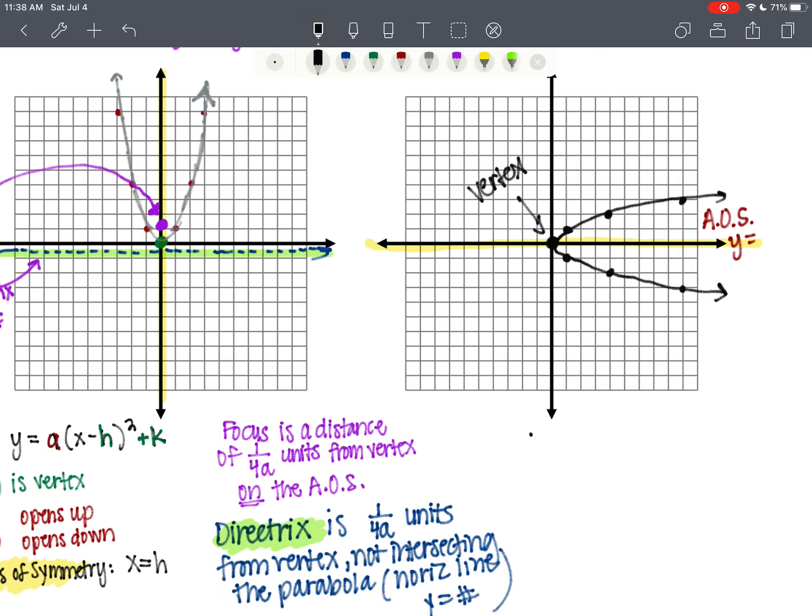And let's write this down so you can see exactly what it's going to equal. So we're going to have x equals a times y minus k quantity squared plus h. Now, the vertex is still h, k. But you can see where the h comes from and where the k comes from.